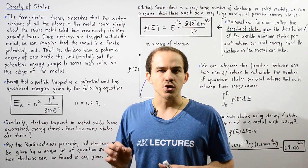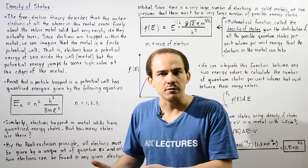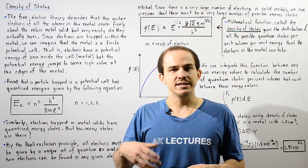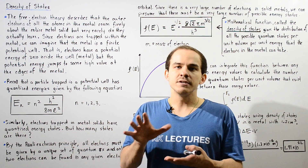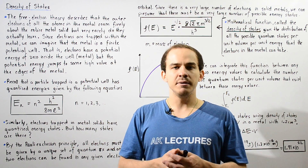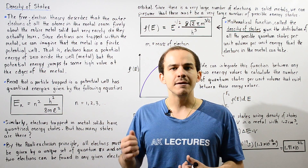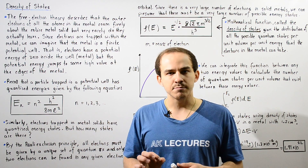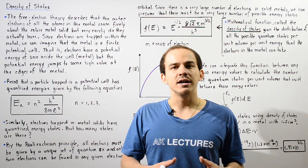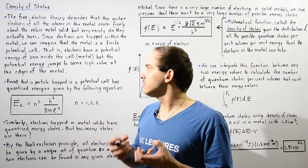Even though electrons are allowed to stay within and move freely inside the entire solid metal, they cannot actually escape the surface of the metal. There is a very low probability that an electron will gain enough energy to escape into the surrounding atmosphere, so in a way we can think of the electrons as being trapped inside that metal solid.